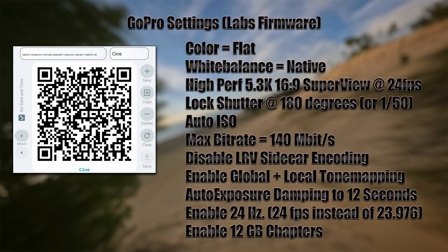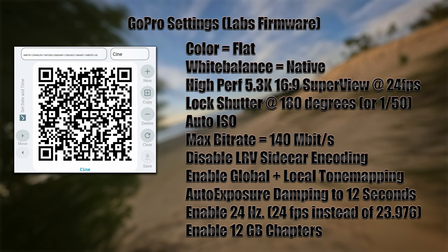Enable 12-gigabyte chapters. The GoPro will normally split files into smaller chunks, which is a pain to rejoin. Setting the maximum file size to 12 GB instead of the default three or four is much more convenient. To apply these settings via QR code, turn your GoPro on, set it to the linear lens, and let it look at the QR code — it'll beep and reboot once it reads the code.